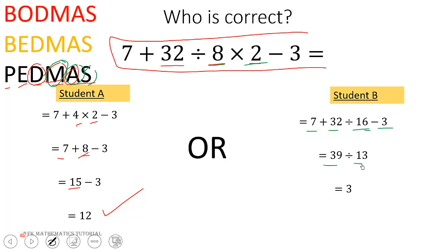Then dividing 39 by 13 to get 3. So you can see that this student did not follow the order of operations correctly.